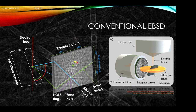In conventional EBSD, we have the electron beam and the formation of the characteristic diffraction cone — the Kossel cone — which is separated by two-theta from the center line, or theta from each side, so two-theta in total width. This gives rise to bands of raised intensity. The center line describes the crystal plane with a particular bandwidth, and there is a characteristic point on our screen — the shortest distance between the screen and the sample — which we call the source point position or pattern center.